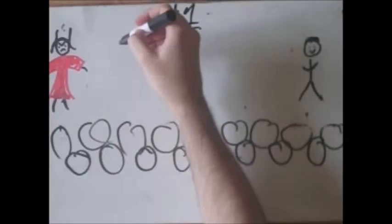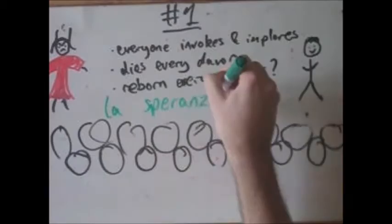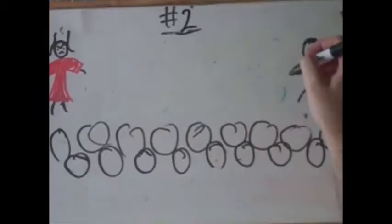Riddle number one. What is that which everyone invokes and implores, which dies every dawn, and which in the human heart is reborn every night? The prince answers, l'esperanza, hope. Correct. These are not easy.